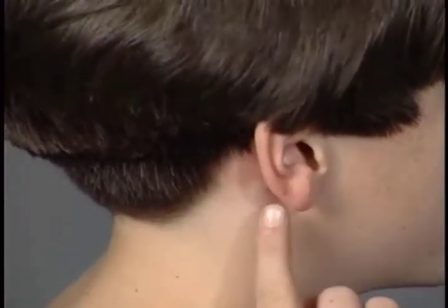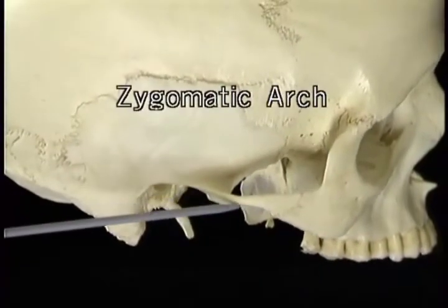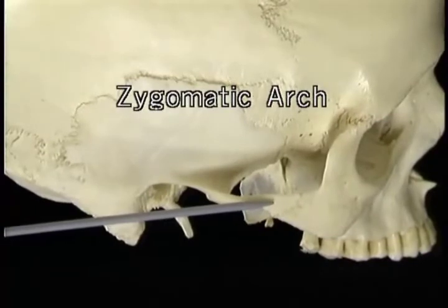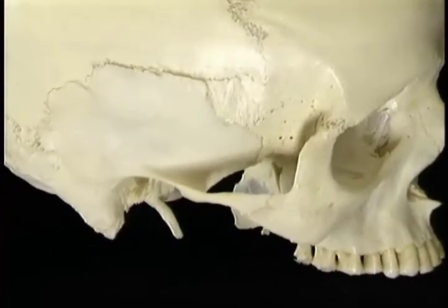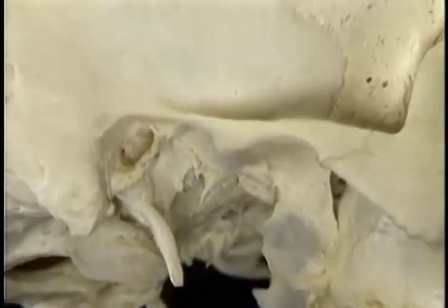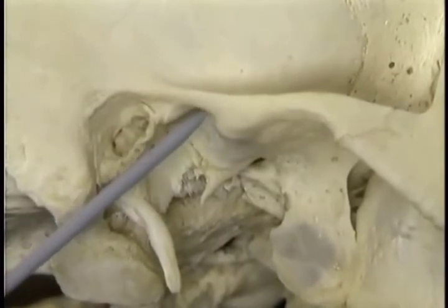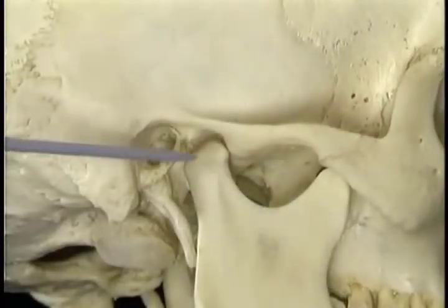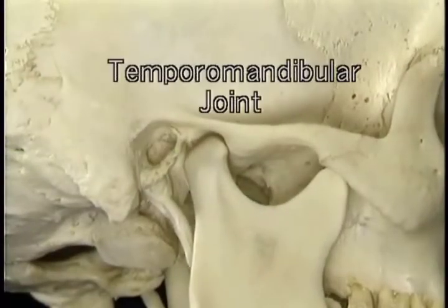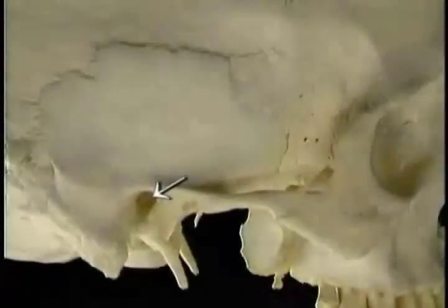It's easy to feel the mastoid process here, behind and below. This is the zygomatic arch, formed largely by the temporal bone and partly by the adjoining zygomatic bone. Here on the underside of the root of the zygomatic arch, this complex curved surface articulates with the condyle of the mandible to form the temporomandibular joint. This is the external auditory meatus leading to the middle ear.